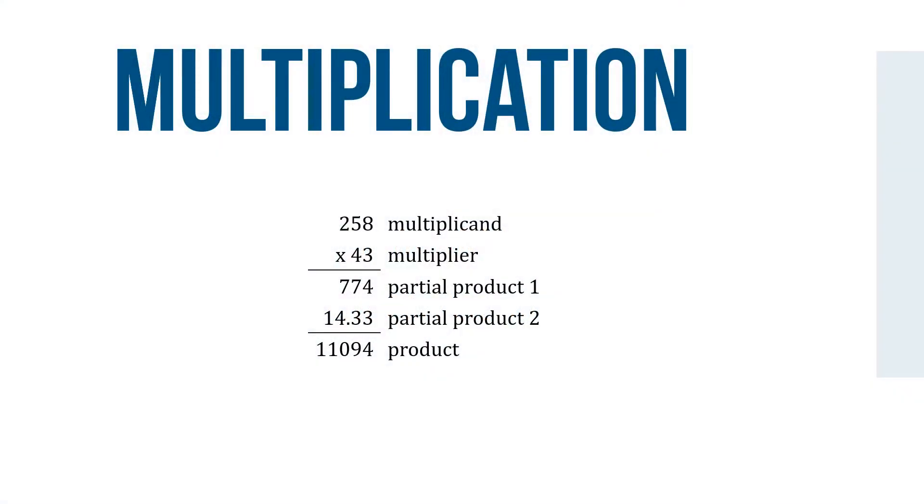These two whole numbers are known as factors. The number being multiplied is the multiplicand, and the number by which the multiplicand is multiplied is the multiplier. The answer to a multiplication problem is the product. Intermediate answers are also called partial products.